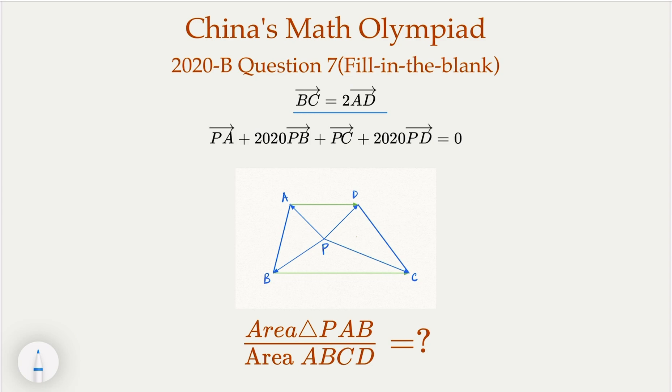And also we have another condition. For a point inside the shape here, I have a point P such that PA, PB, PC satisfy this equation here. Notice that there's 2020 in the equation. Now, what we need to find is the area of this triangle PAB over the area ABCD. Why don't you try to solve it? And when you're done, let's continue.